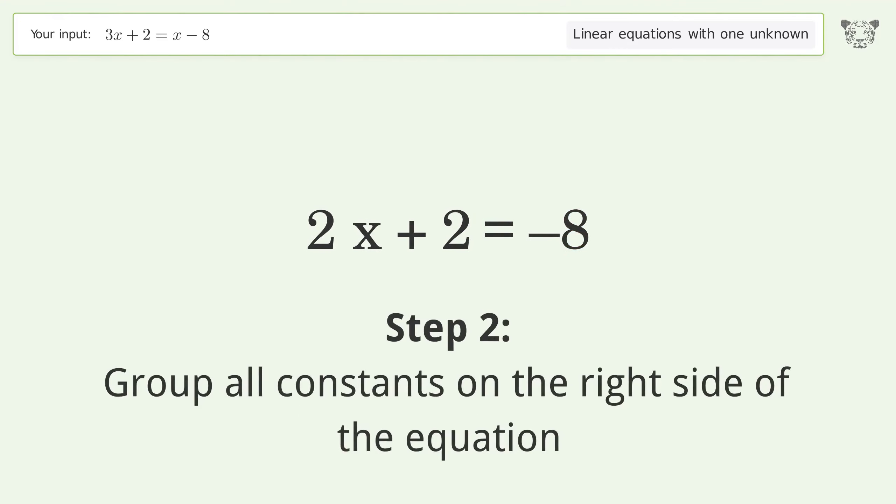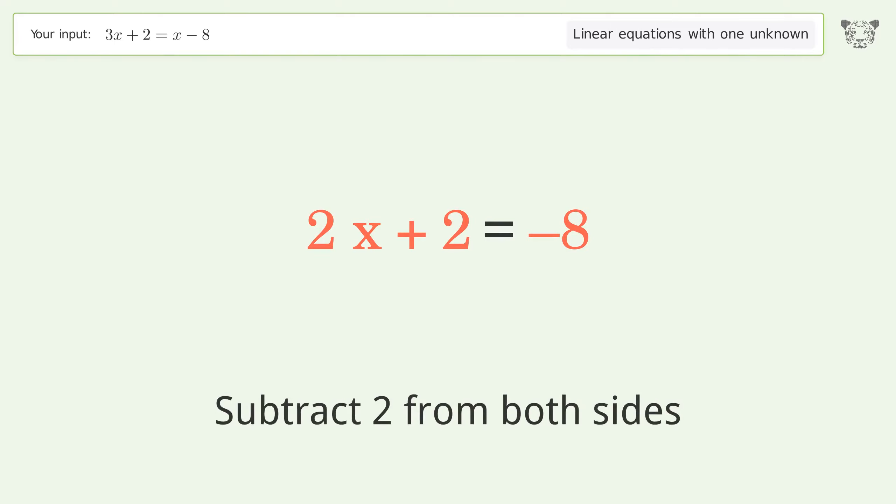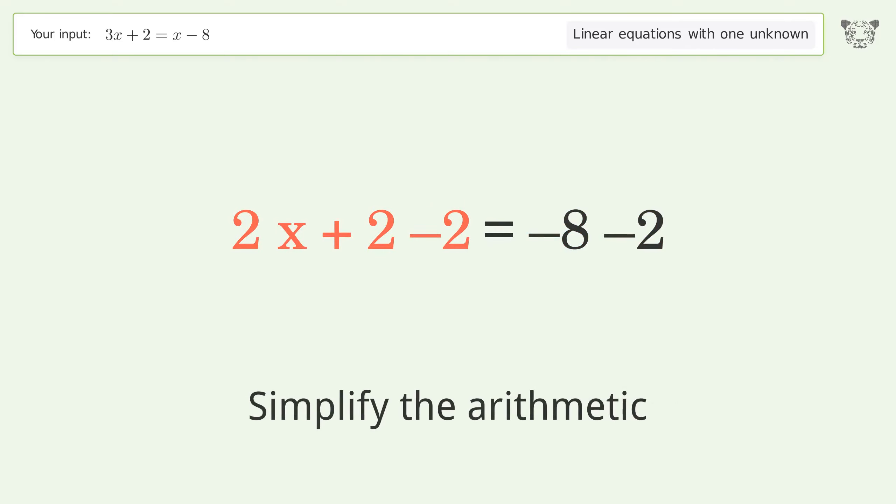Group all constants on the right side of the equation. Subtract 2 from both sides. Simplify the arithmetic.